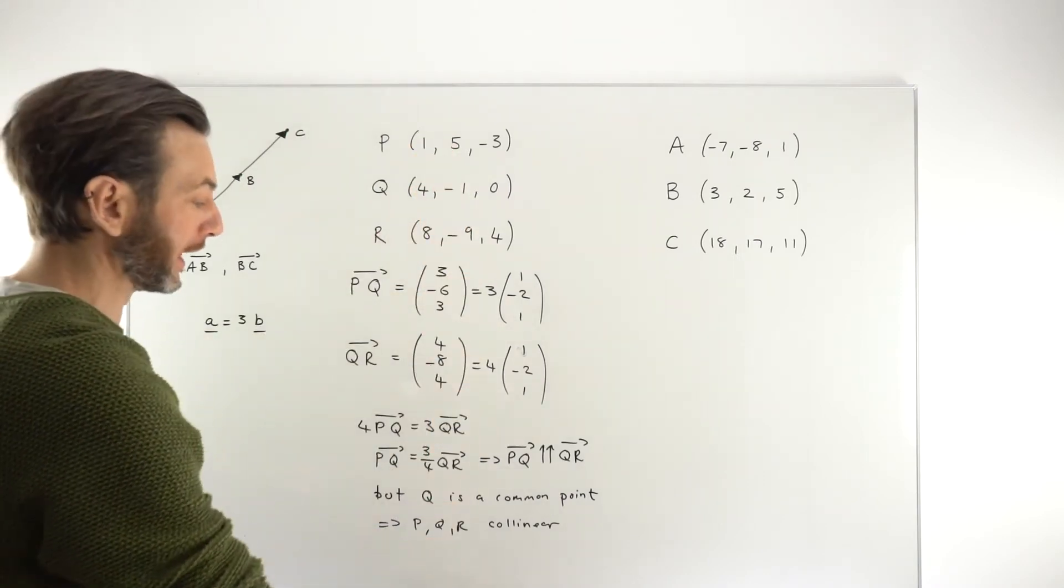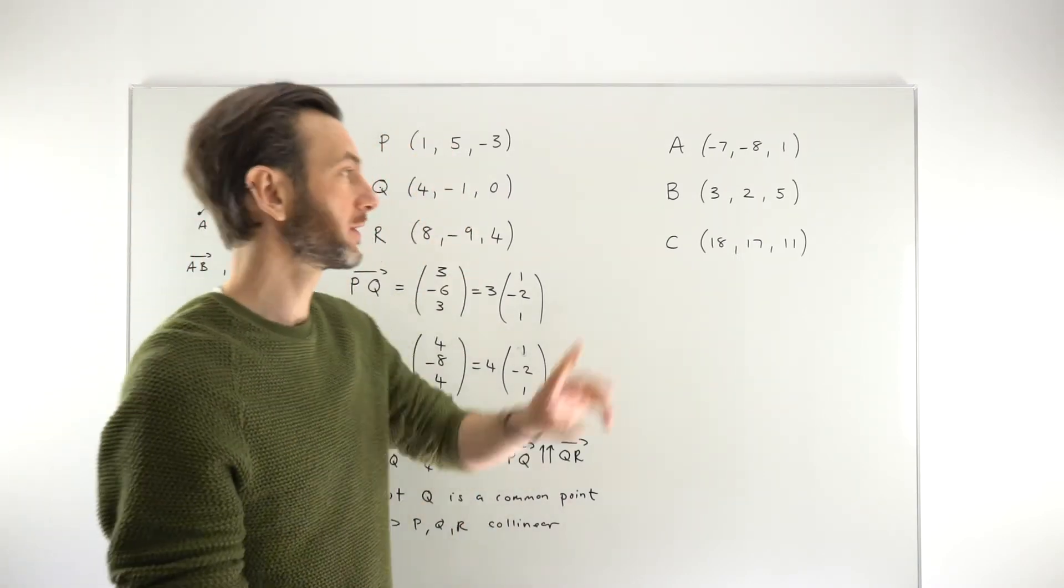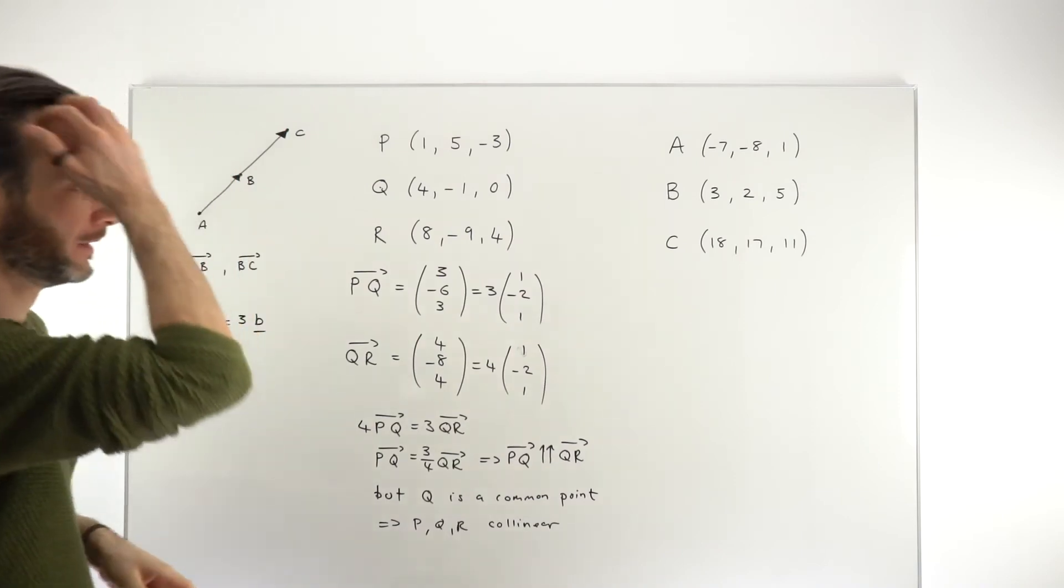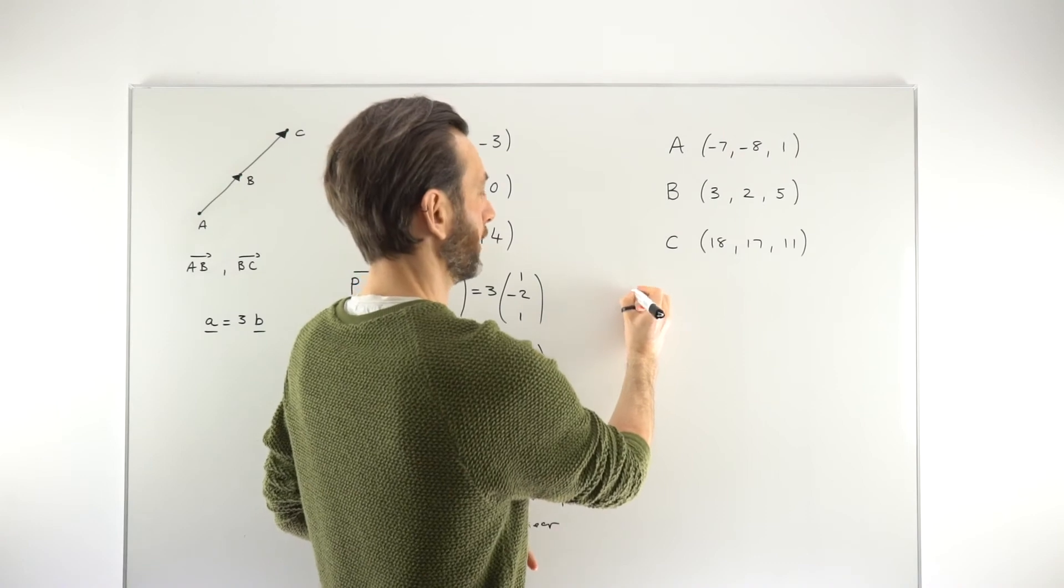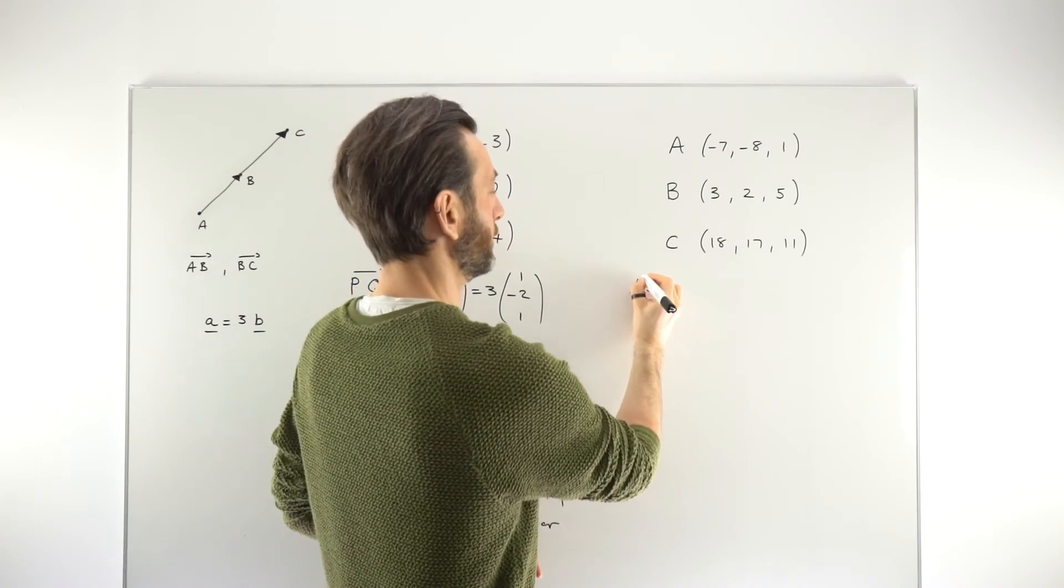Okay, so I've worked through that one quite slowly. You can go through these questions a lot more quickly. Let's do that with this one here. But the technique will never change. It's really just about making your vectors, showing that they're parallel, and then stating that there's a common point.